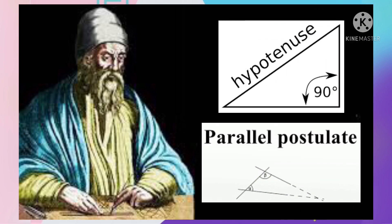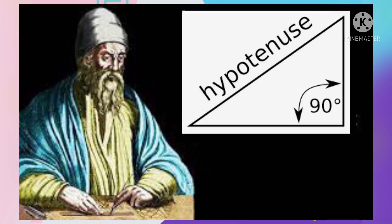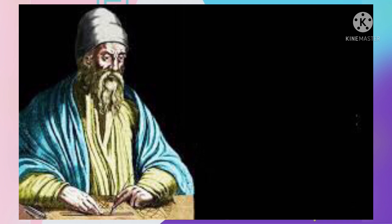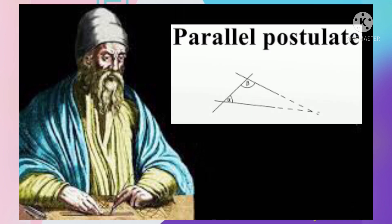Axioms and Postulates. The axioms, or postulates, are the assumptions that are obvious universal truths. They are not proved. Euclid introduced the geometry fundamentals, like geometric shapes and figures, in his book Elements, and stated five main axioms, or postulates. This is an example of an axiom. This is an example of a postulate.